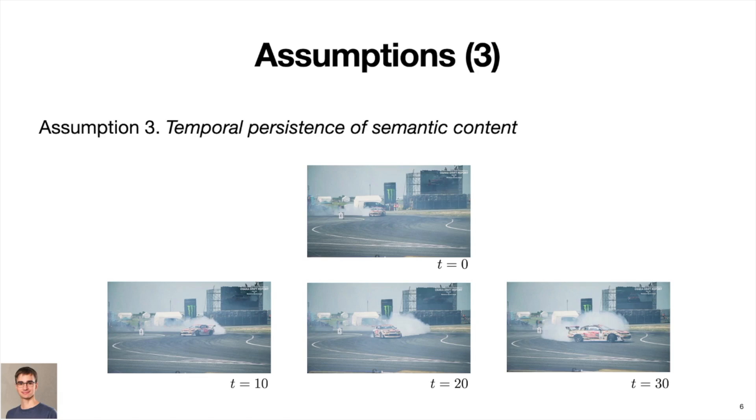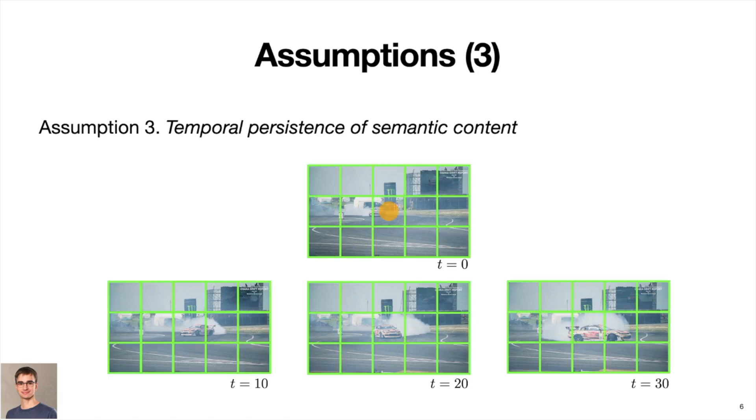A bit more technically, this means that if we extract a feature from one grid cell, we can find a semantically corresponding feature in the other, temporally close frames. This is in contrast to contrastive random walk approach by Jabri et al. that assumes every frame to contain the corresponding feature, which can be problematic due to occlusion.